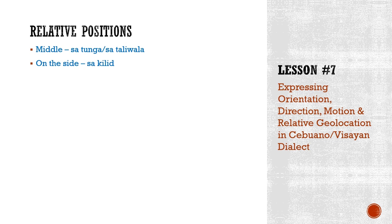What about on the side? So it's not in the middle — it's on the side. If you imagine a circle and you put a dot in the middle, that portion right in the middle is sa tunga. And anything on the side is sa kilid.